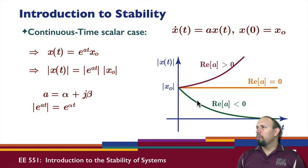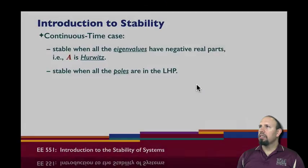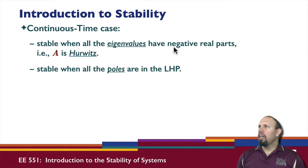In order to be stable, the eigenvalues or poles need to be strictly in the left half plane, that is, have negative real parts. In the continuous-time case, the system is stable when all the eigenvalues have negative real parts. A matrix that has all negative real parts for its eigenvalues is called a Hurwitz matrix.